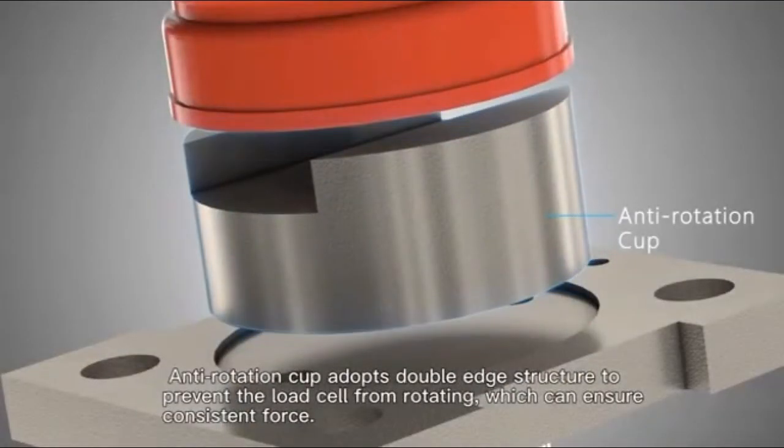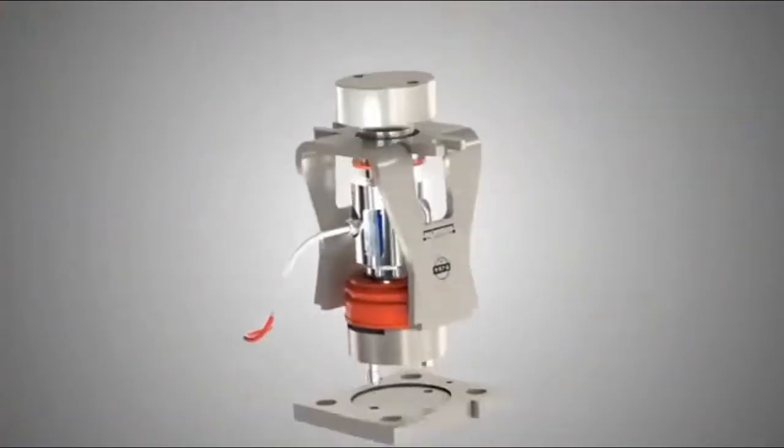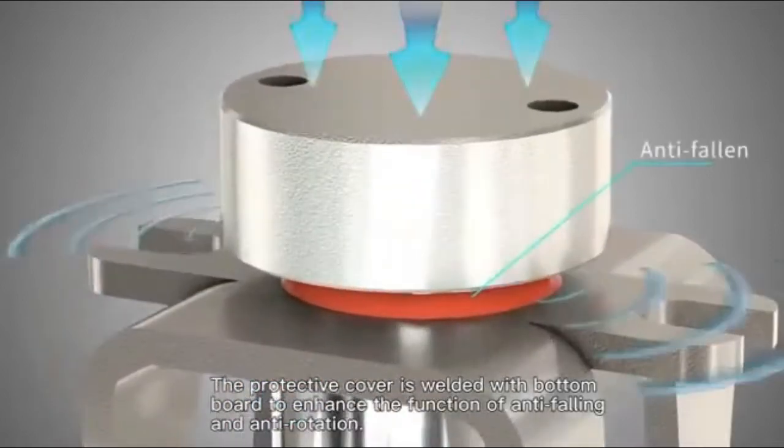The anti-rotation cup adopts double edge structure to prevent the load cell from rotating which ensures consistent force. The bottom board is the same size as the cup type's bottom board. The protective cover is welded with bottom board to enhance the function.